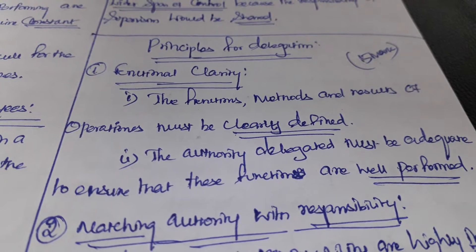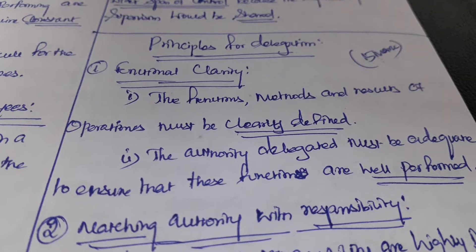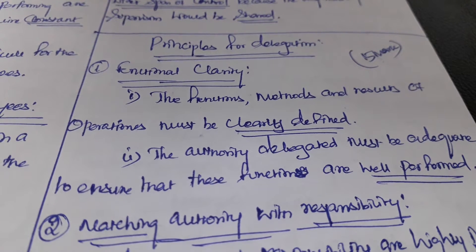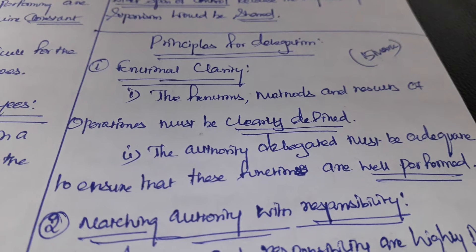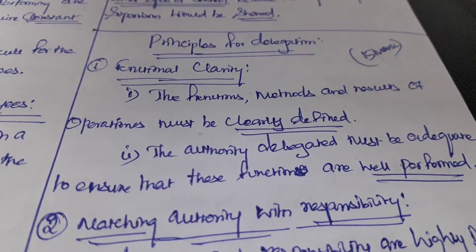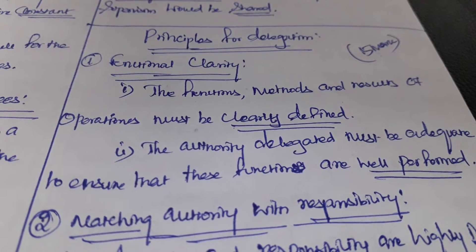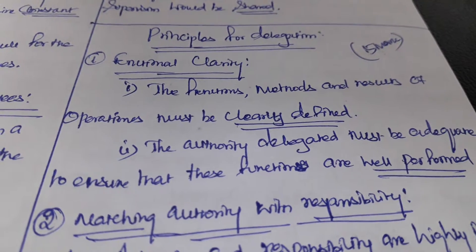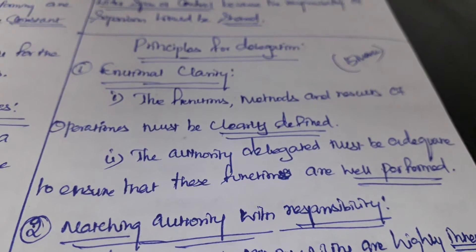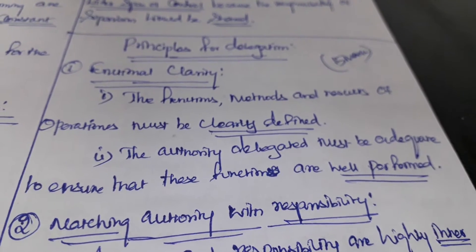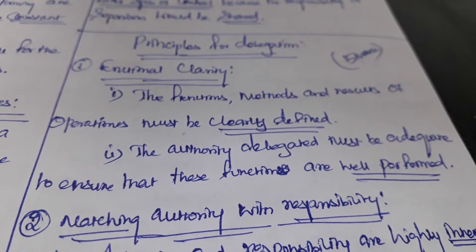The first principle is functional clarity. The functions, methods, and results of operations must be clearly defined for our subordinates. The authority delegated must be adequate to ensure that these functions are well performed.